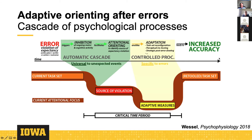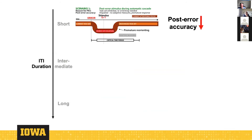There is a critical time period during which the task set is suspended — inhibited — and attention is pulled away from it towards these adaptive processes. This explains post-error accuracy effects and their dependence on RSI. If a stimulus occurs at a short RSI, it can occur while attentional focus is still on identifying the source of the violation, and prematurely reorienting back to the task set in order to respond will reduce accuracy.